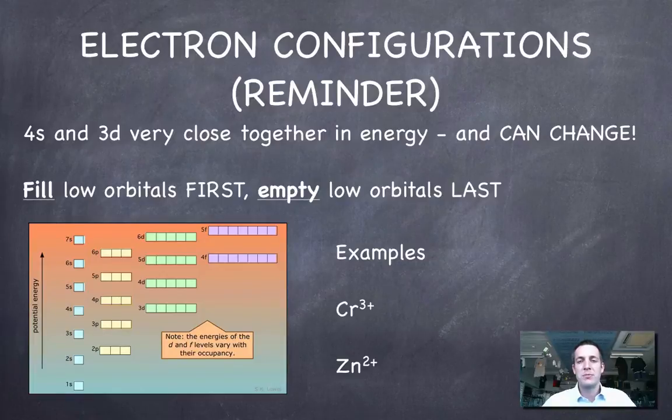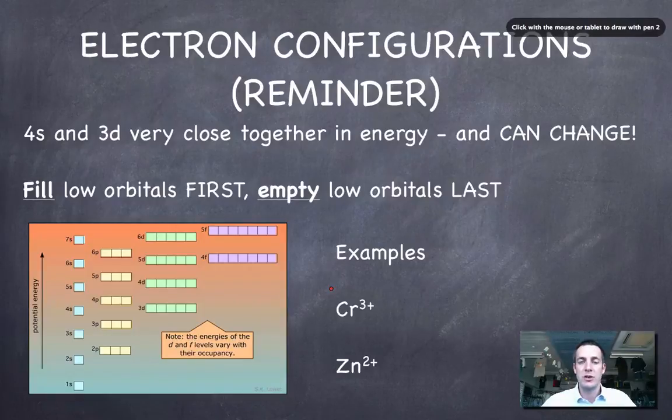Now this should be a little bit of a reminder. We've talked before in the atomic structure topic about the building up of electrons in orbitals. And we've mentioned before that the 4s and 3d subshells are very close together in energy and that they can change depending on whether there's electrons in them or not. And this is really quite relevant because again we're looking at d-block elements so elements with electrons in their d-subshell as their highest occupied orbitals.